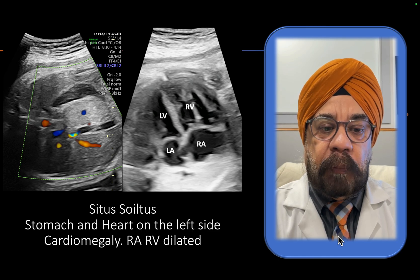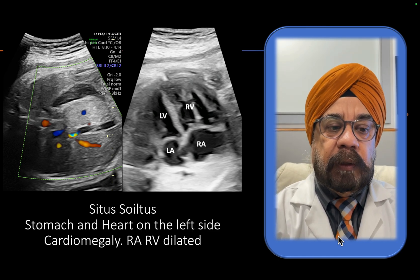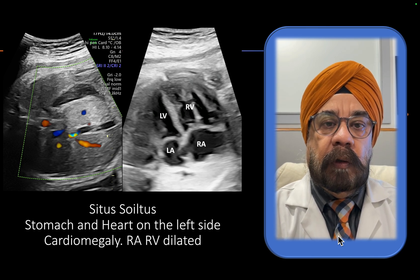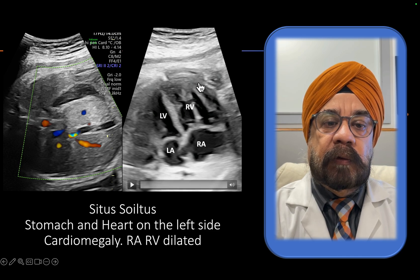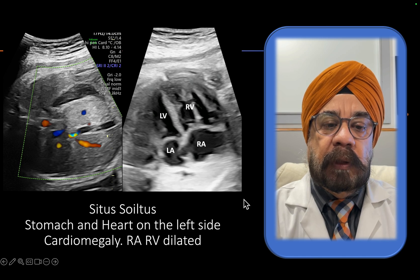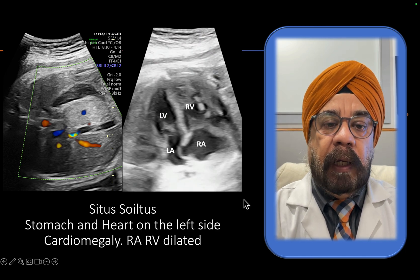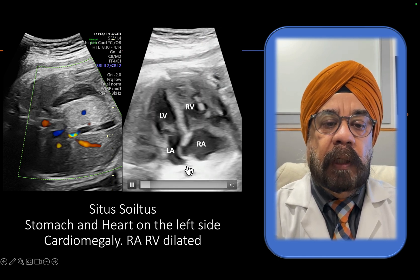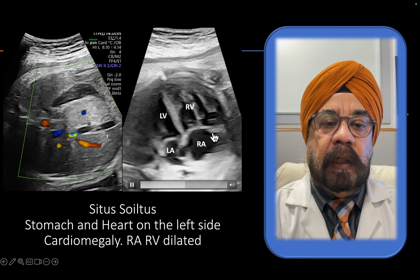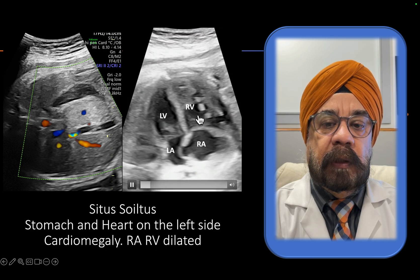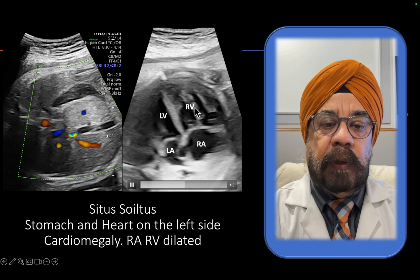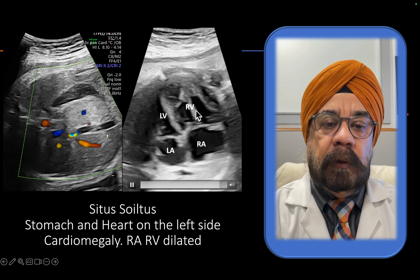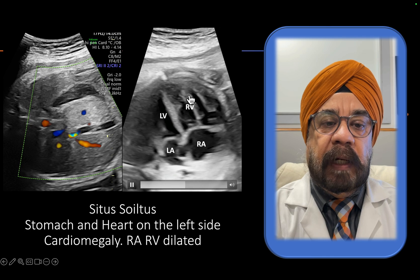This patient has situs solitus, and on the four-chamber view you can see cardiomegaly. The right ventricle is dilated and the RA is dilated. The fossa ovalis bulges to the left side — that's the 2D four-chamber view. You can notice the large RA and large RV, and you can see the hyperechoic anterior papillary muscle and the moderator band.